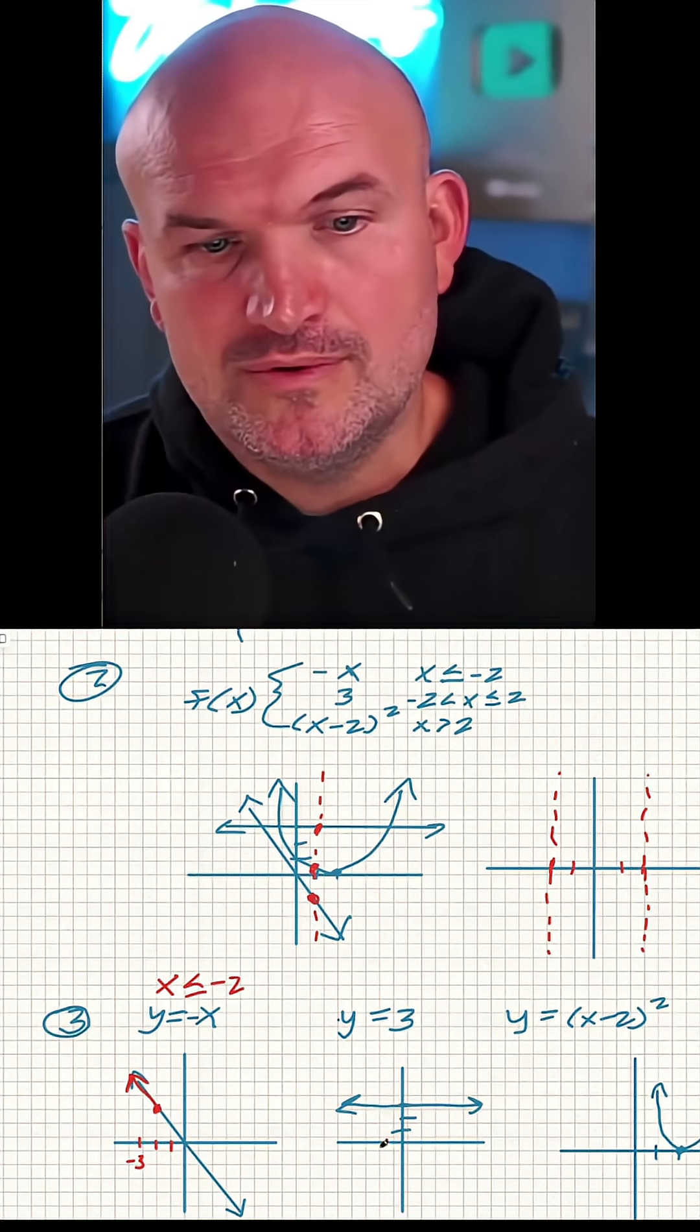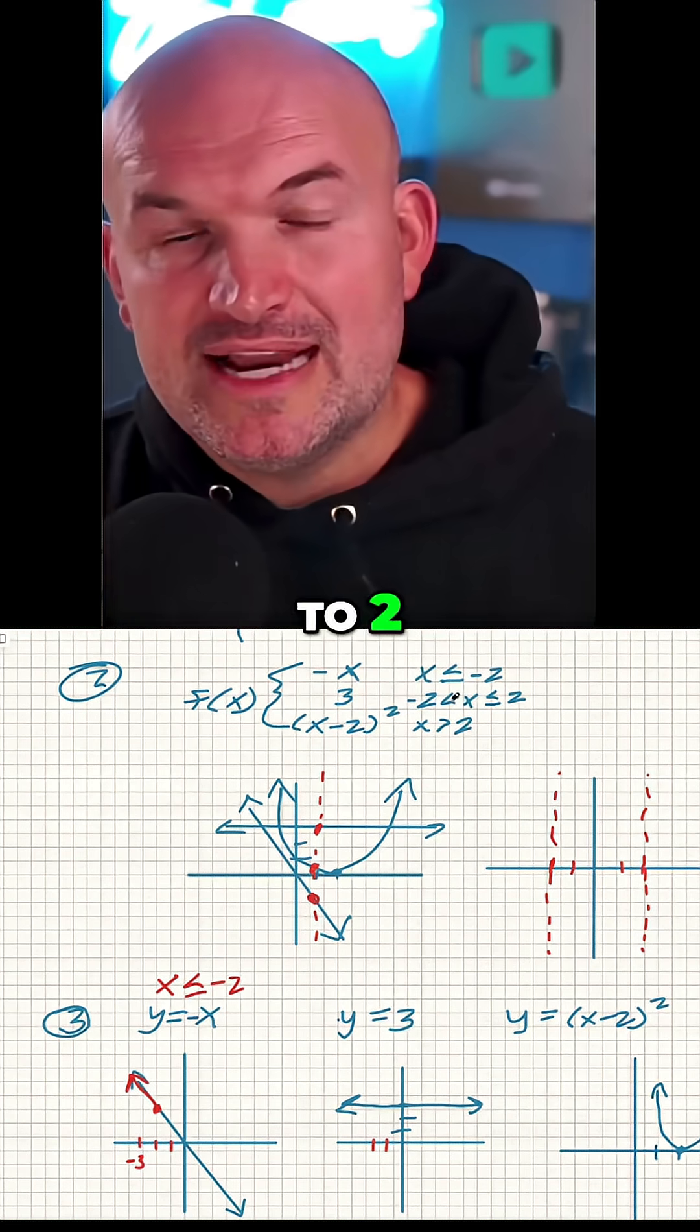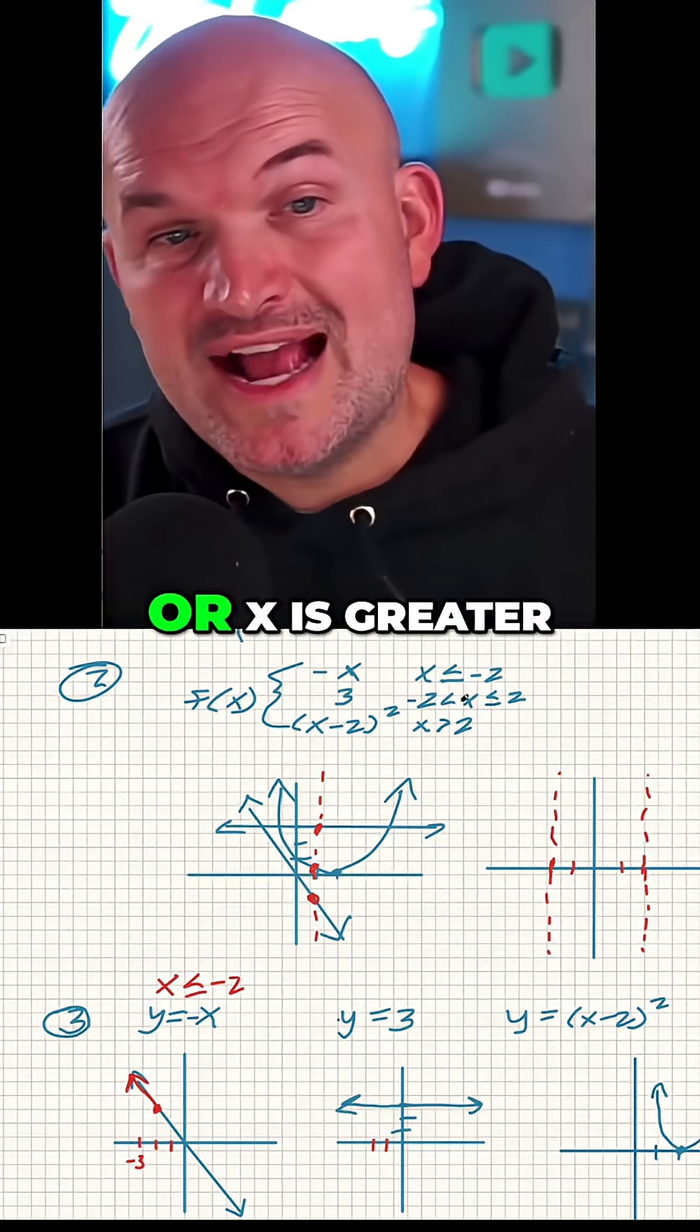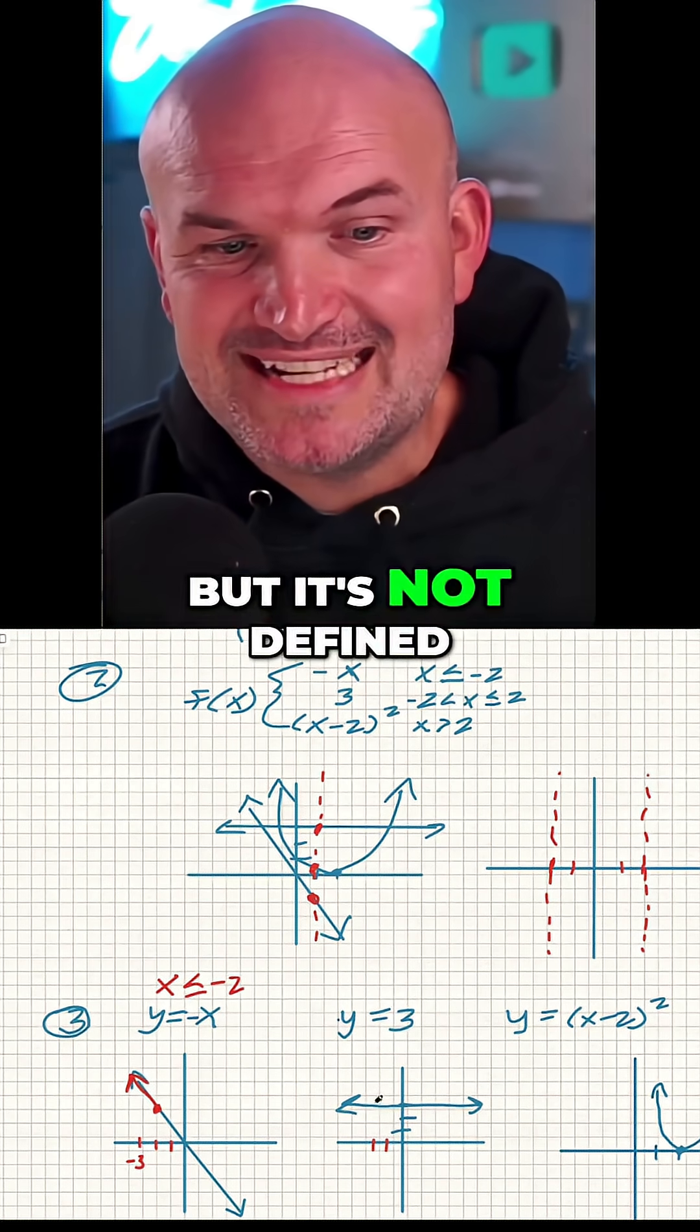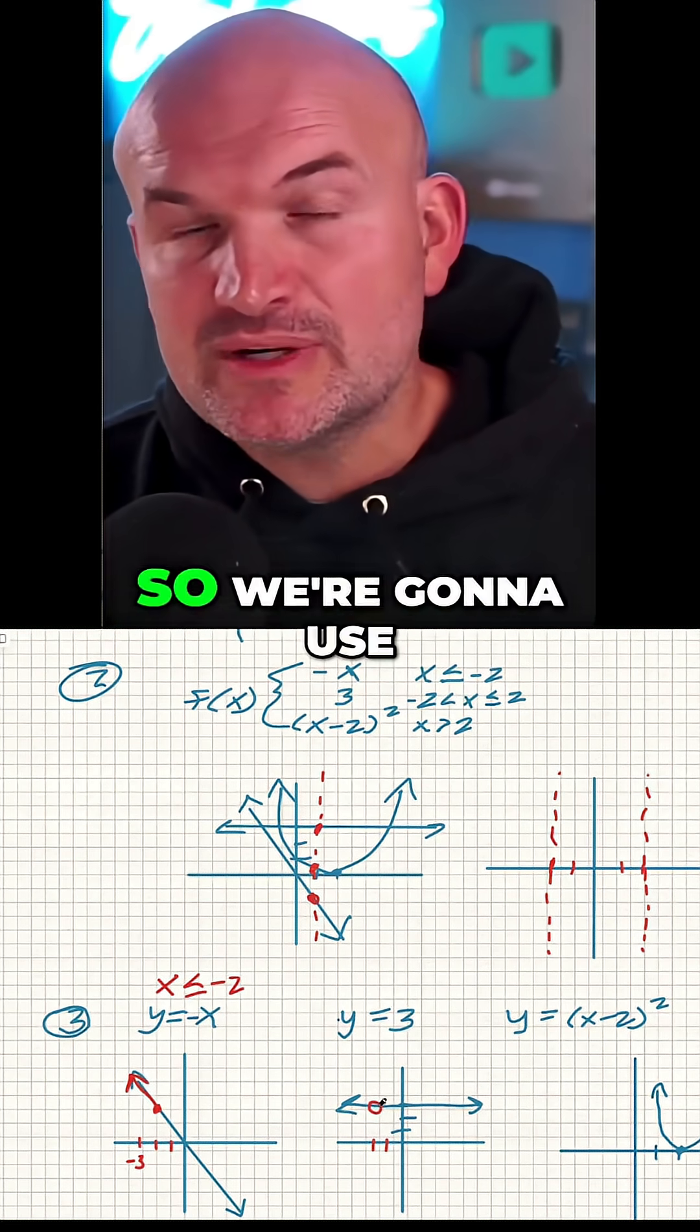Now this is going to be restricted from negative two to two. Negative two is greater, or x is greater than negative two, but it's not defined at negative two, so we're going to use an open circle.